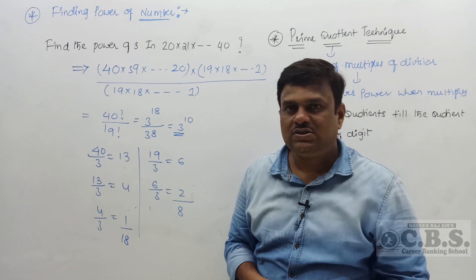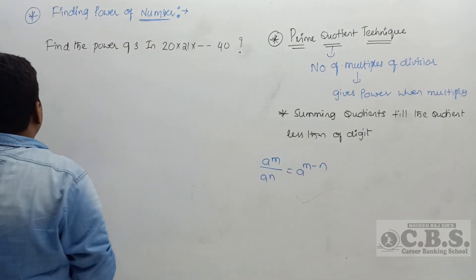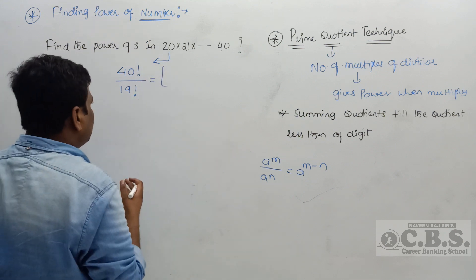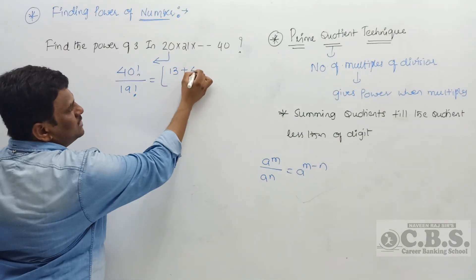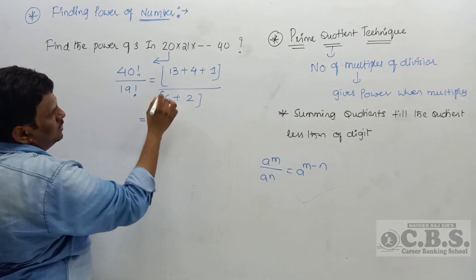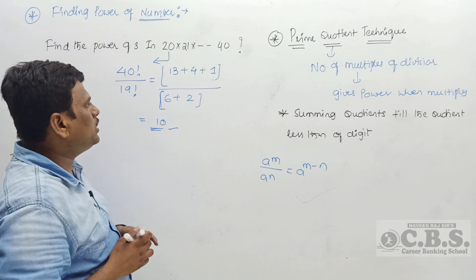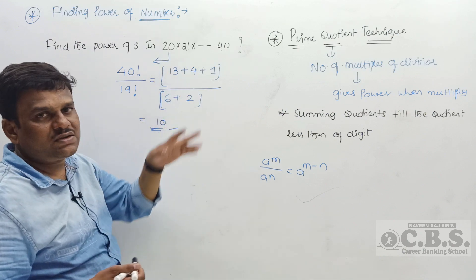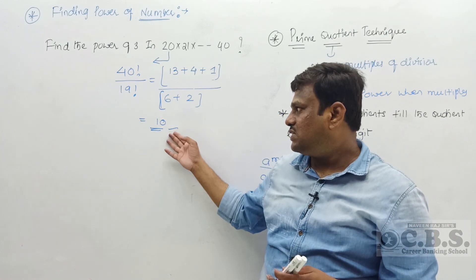The same question can be solved more quickly using the shortcut. Take the last number (40) as 40! and the number before the start (19) as 19!. Find quotients for 40÷3: 13, 4, 1 → sum = 18. Find quotients for 19÷3: 6, 2 → sum = 8. Then subtract: 18 − 8 = 10. So the power of 3 in the given expression is 10. When using a division rule, apply this subtraction concept directly.